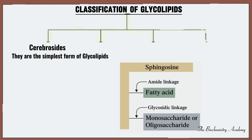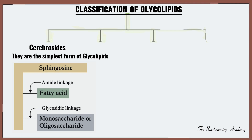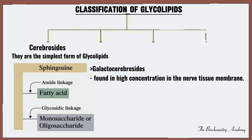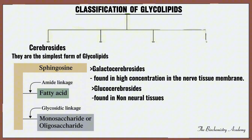When a monosaccharide — which can be either glucose or galactose — is attached to the ceramide, it is called a cerebroside. There are two types: the galactocerebroside, where galactose is the monosaccharide and it is found in high concentration in the nerve tissue membrane; and the glucocerebroside, where glucose is the monosaccharide, found in the non-neural tissues.